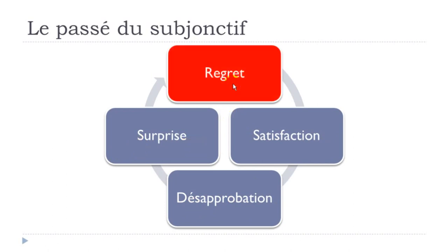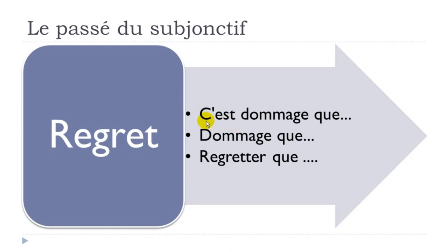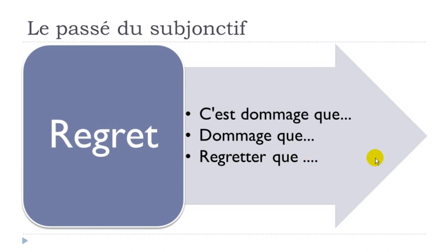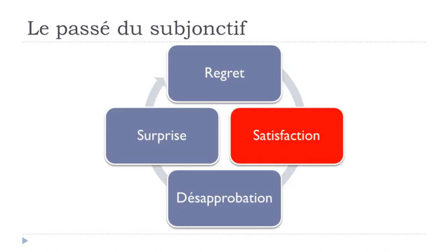The first one: regret. We have structures like c'est dommage que — it is a pity that — and if you continue with a past structure, it should be at the passé du subjonctif. Dommage que works exactly the same, but it's more spoken because you've dropped the subject and the verb, so use it orally in less formal situations. It's better to use c'est dommage que in formal contexts, and then regretter que — to regret that — followed by the passé du subjonctif.